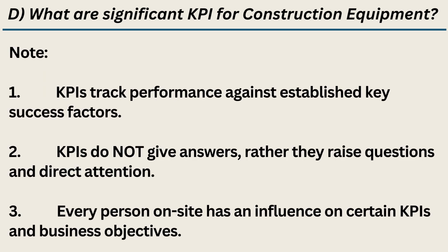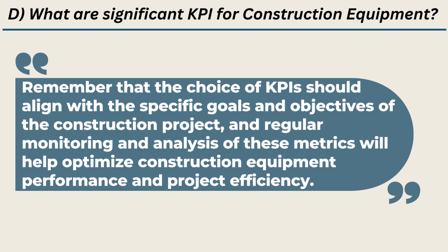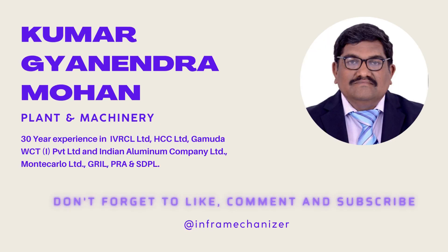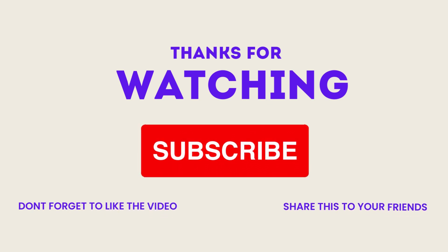Note: KPIs track performance against established key success factors. KPIs do not give answers; rather they raise questions and direct attention. Every person on-site has an influence on certain KPIs and business objectives. Remember that the choice of KPIs should align with the specific goals and objectives of the construction project, and regular monitoring and analysis of these metrics will help optimize construction equipment performance and project efficiency. Regularly monitoring these KPIs can help construction companies optimize equipment performance, minimize downtime, reduce costs, and improve overall project efficiency. We have explained in brief about key performance indicators for construction equipment. We request all to mention your views and requirements in the comments section of the YouTube video, and also like and share with your friends.